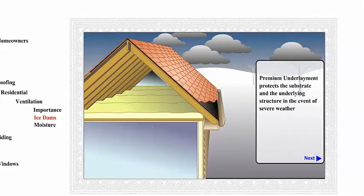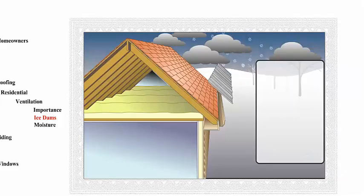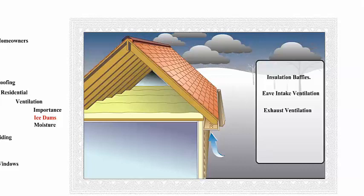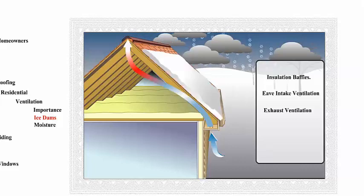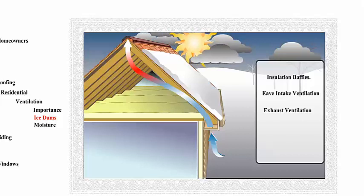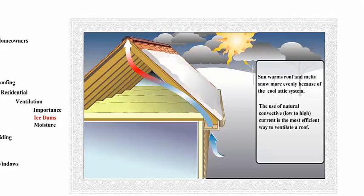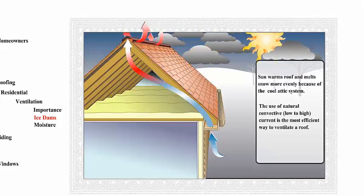Ventilation will achieve that for you, but only after you insulate and air seal. Then you've got a uniform deck temperature where that snow can melt uniformly right off that edge, carried away by the gutter system. That's the perfect world — that's how it works.